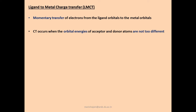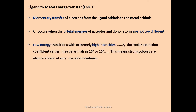In summary, ligand to metal charge transfer involves momentary transfer of electrons from the ligand orbitals to the metal orbitals. The metal is the acceptor atom and the ligand is the donor atom. Charge transfer occurs when the orbital energies of the acceptor and donor orbitals are not too different. Most charge transfer transitions are low-energy transitions because the energy gap between acceptor and donor orbitals is not too large.